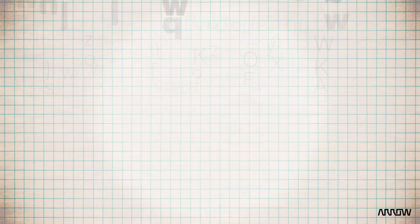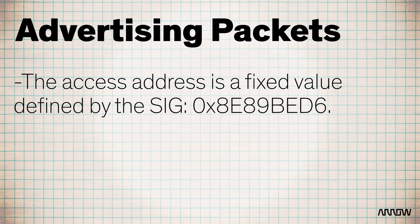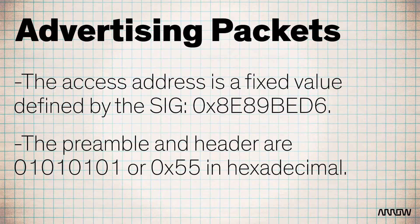In this lesson, we're going to focus on the advertising packets. For these packets, the access address is defined as a fixed value by the SIG, 0x8e89bed6. This means the preamble is 01010101 or 0x55 in hexadecimal.